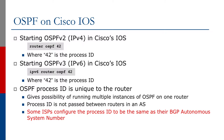Configuring OSPF on Cisco IOS is done the following way. To start OSPFv2, which is for IPv4, we do 'router ospf' and then a process ID. The process ID can be any number. That number is unique to the router — it's not shared with other neighbors.